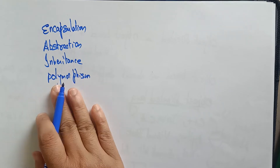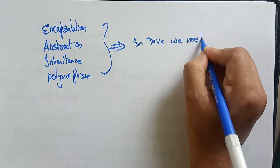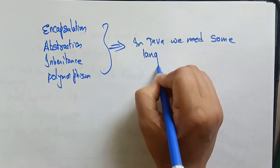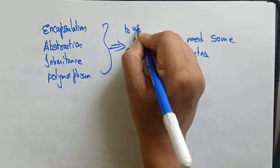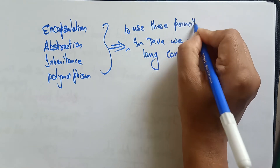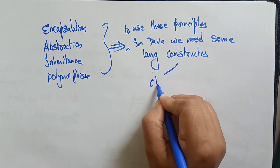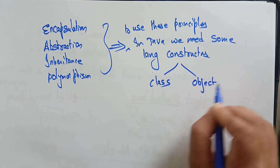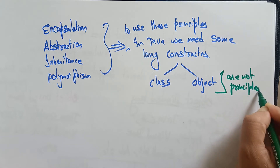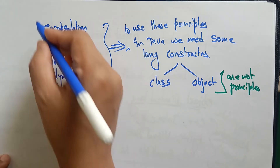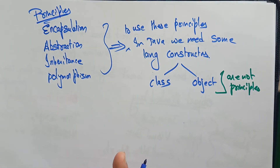To use these principles in Java programming, we need some language constructors. Those language constructors are: one is the class, and another is the object. Remember, class and object are not principles. In an exam or interview, if asked about the principles, you need to say encapsulation, abstraction, inheritance, and polymorphism — those are the Java OOP principles.